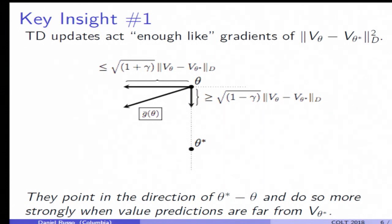Now, in carrying out this analysis, we develop a couple key insights that might be interesting beyond these bounds. One is a sense in which TD updates act enough like gradients of this particular value function loss. And in particular, this means that the TD update at each step is going to make a positive angle with the direction toward the TD limit point. So we move consistently in that direction.